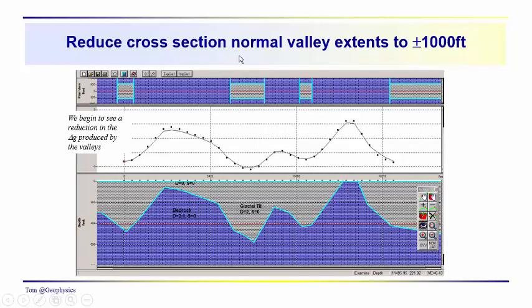So the next thing we're going to do is we're going to decrease, we changed the scale over here to feet, and we've kind of zoomed in a little bit. We're going to reduce the valley extents to plus and minus 1,000 feet, so they come out towards you 1,000 feet, they go into the section 1,000 feet.